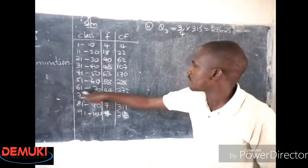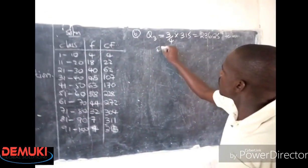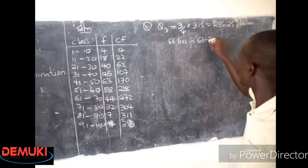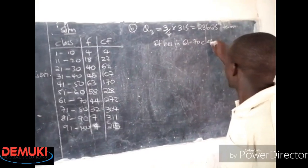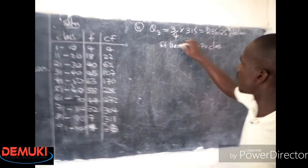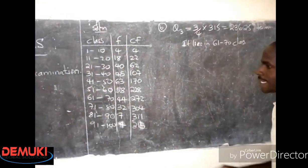So it lies in this class of 61 to 70. You can say it lies in the 61 to 70 class.